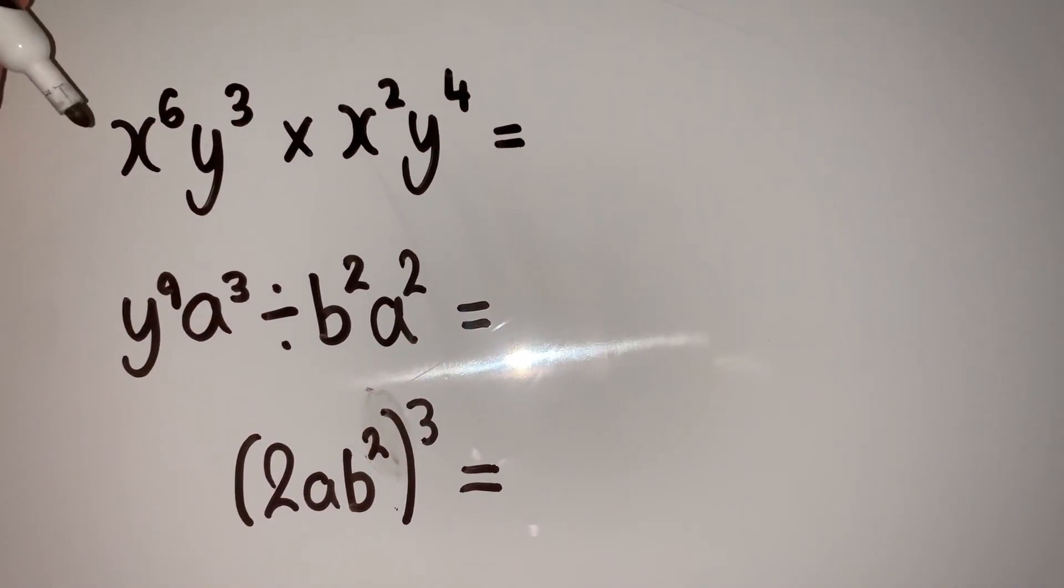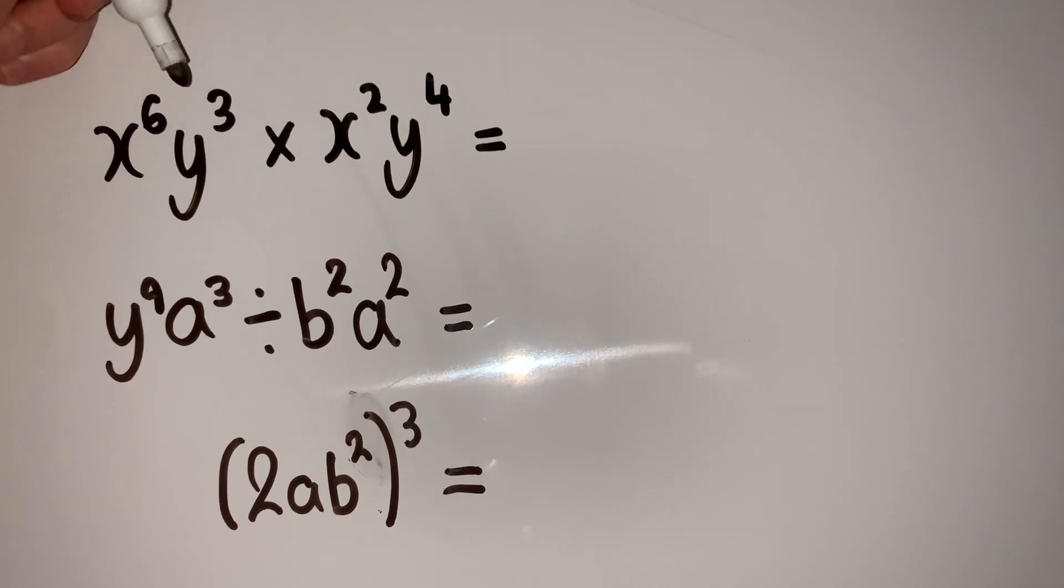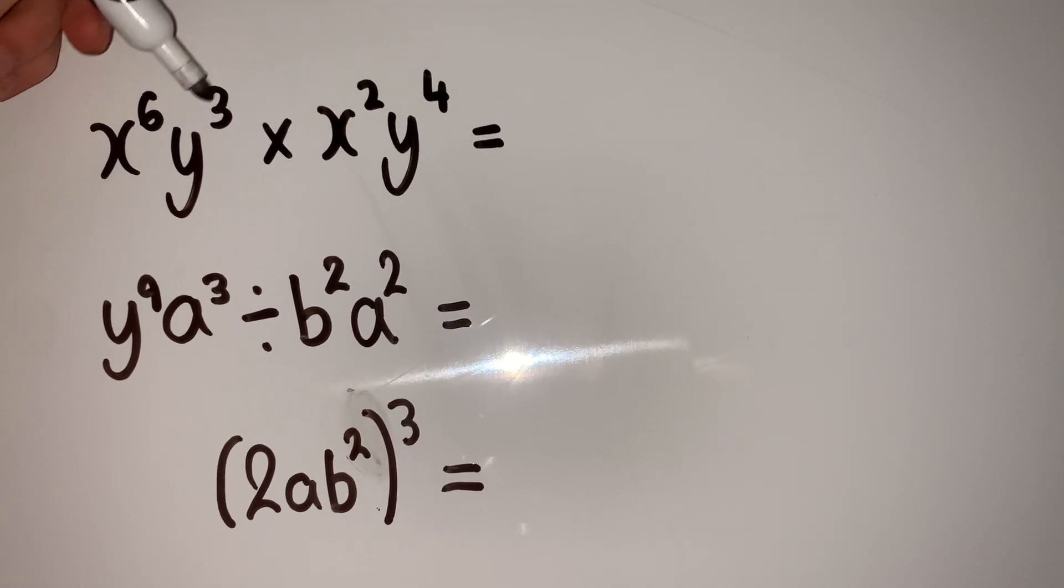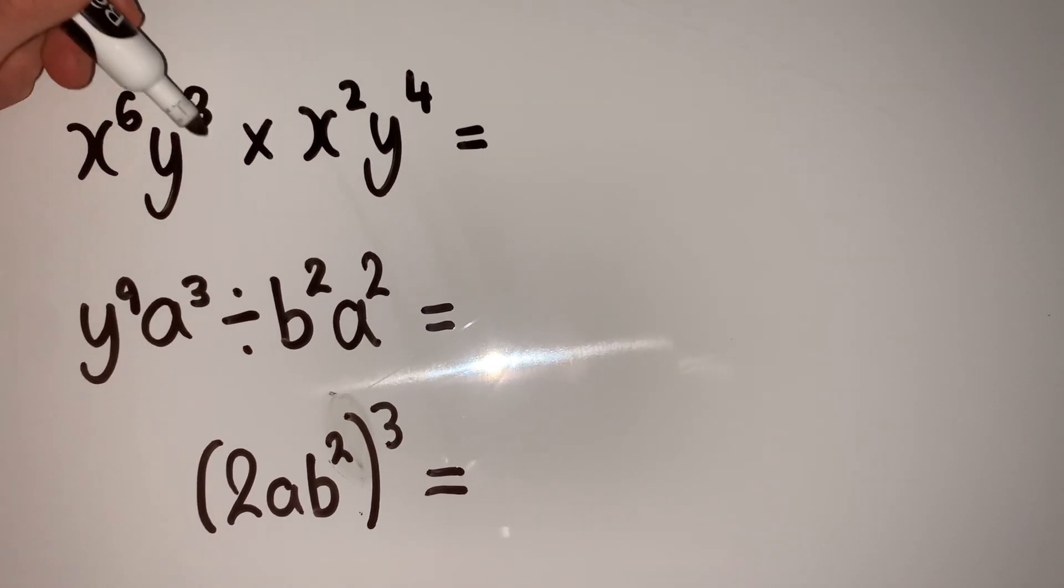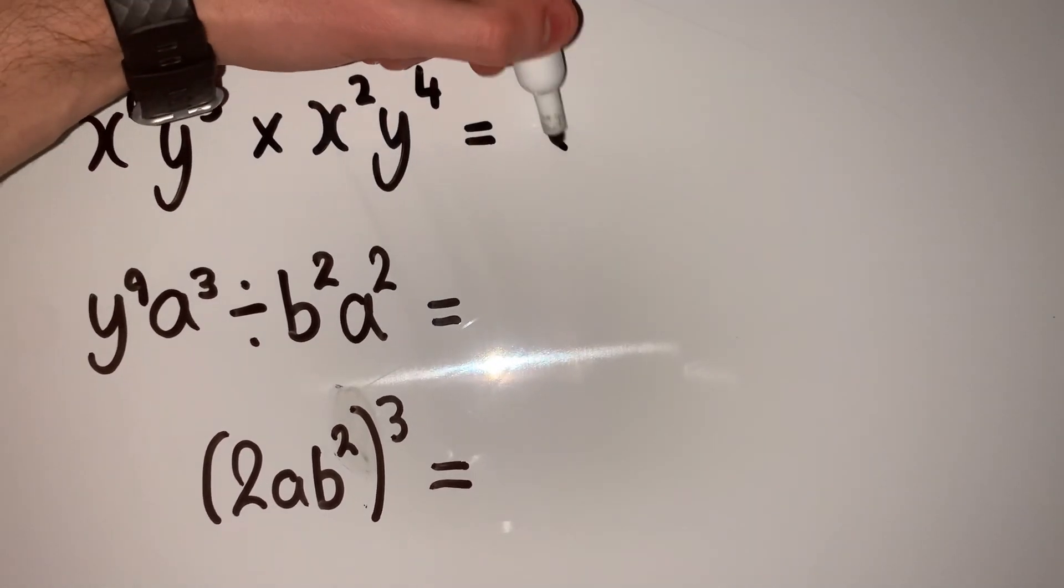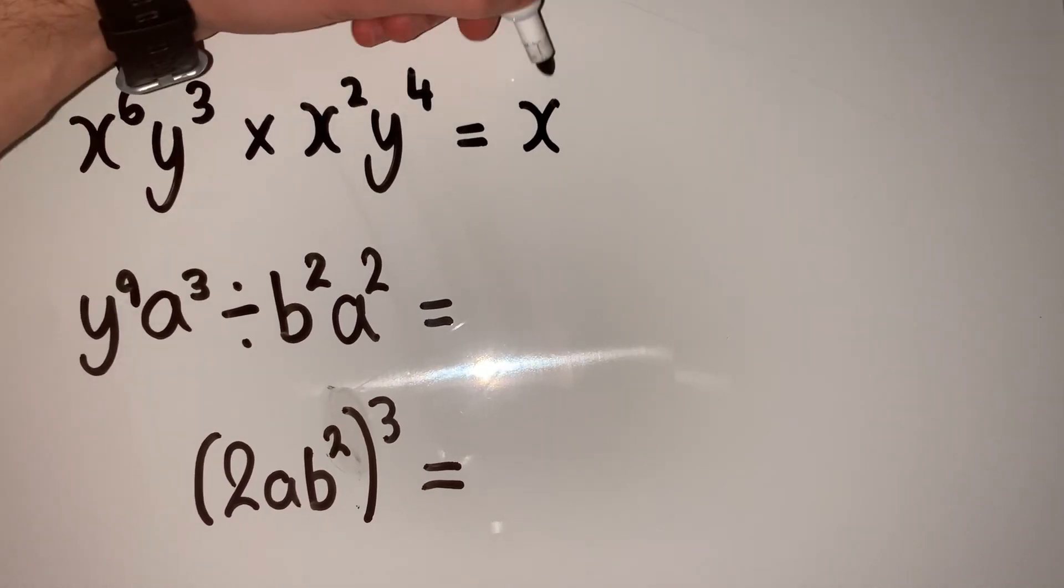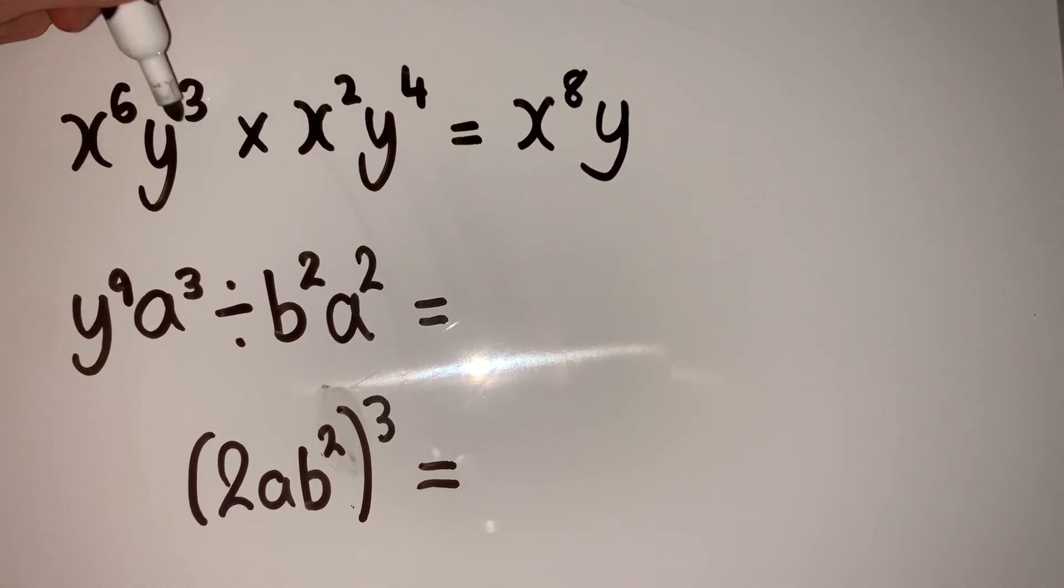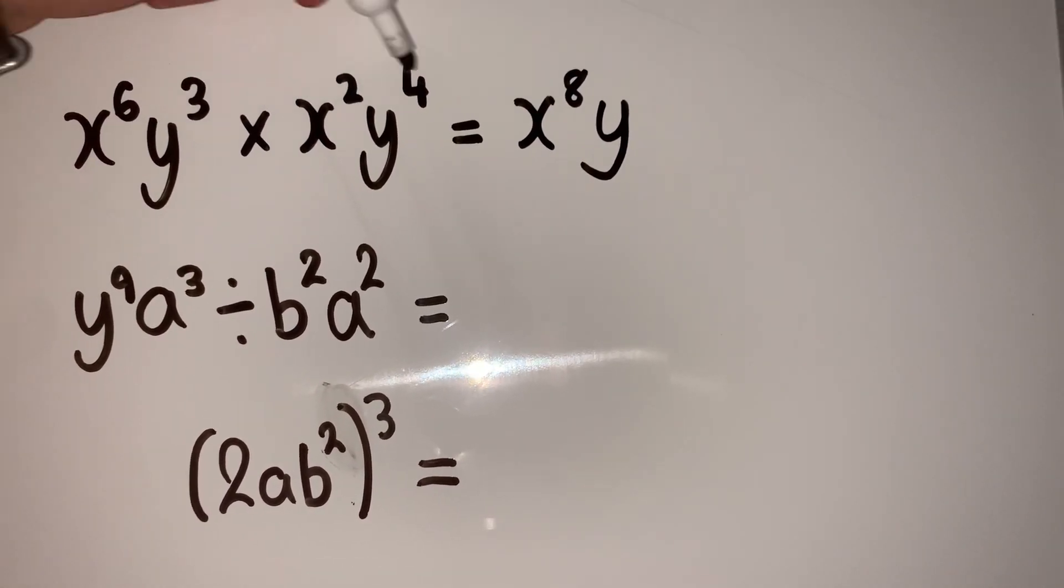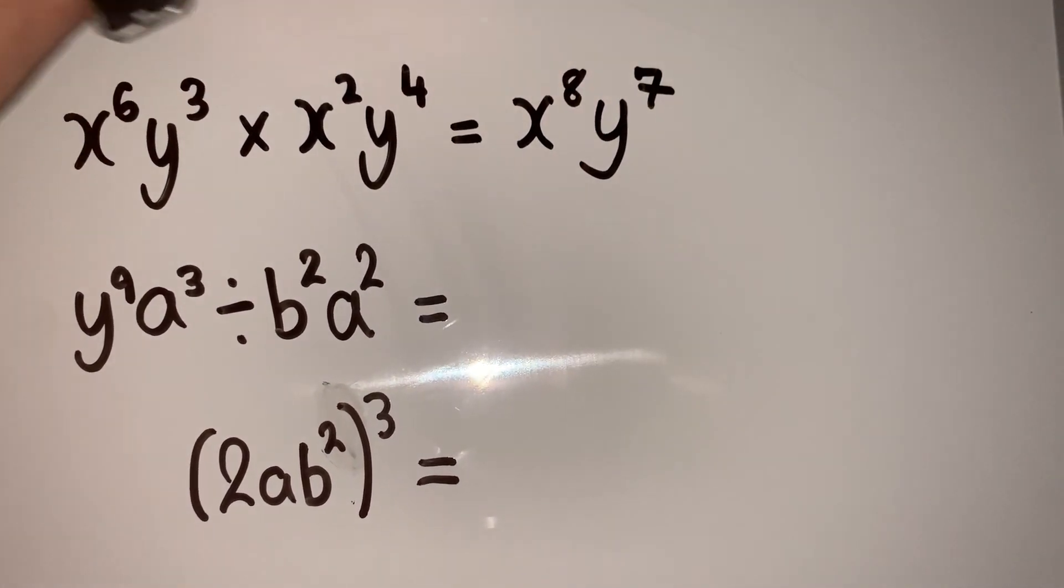Here are three examples we're going to go through to get used to these rules. We have x^6*y^3 multiplied by x^2*y^4. Remember when we're multiplying, we add the powers. So we have x^(6+2), which is x^8, and then we have y^3 times y^4, so 3 plus 4, giving us y^7.